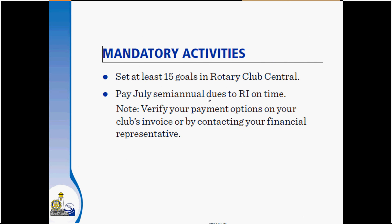Under the mandatory activities, you'll find that this is something every club can do. First, you just need to go into Rotary Club Central and set 15 goals for your club. There are many goals across all three areas — club, service, and foundation — so just go in and set 15 goals. Secondly, you have to pay your July semi-annual dues to RI on time. Every club should be able to meet these two mandatory criteria.